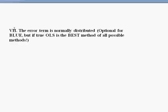Now, this is optional for ordinary least squares to be the best linear unbiased estimator. But, if the residual is normally distributed, then ordinary least squares is not only the best linear unbiased estimator, it is the best of all possible methods. So, it's something that is important because it tells you that if your residual is not normally distributed, there might be a better method out there.